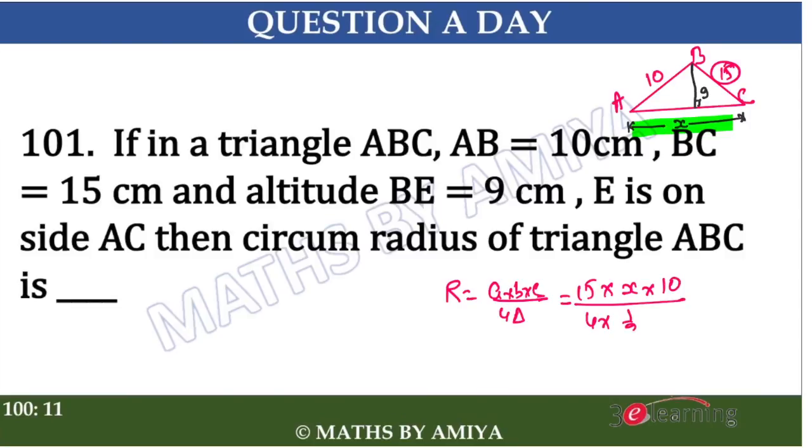The area is equal to half into base. Assume the base is X and the height is 9. This is a quite easy formula, ABC upon 4 delta. That is A is 15, B is assumed X, C is 10, upon half into base into height. Our X is canceled out, this one is nothing but 2, so this one is nothing but 5 into 3 into 3 into 5, so we have the answer is 25 by 3.